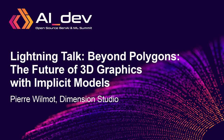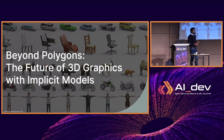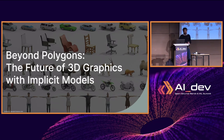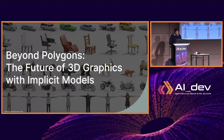My name is Pierre Villemot. I'm coming from Dimension Studio in London. We're a real-time production company, which means we work on movies, TV shows, advertising, and we've been doing a bit of metaverse as well. Today I'm going to be talking about computer graphics, like 3D assets, specifically how we create them, and more specifically how the new kind of AI technology is changing the usual pipeline.